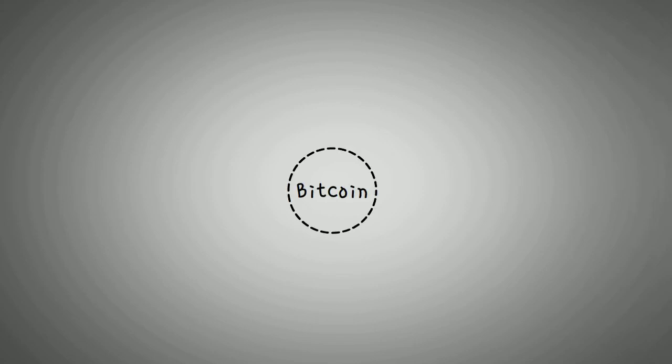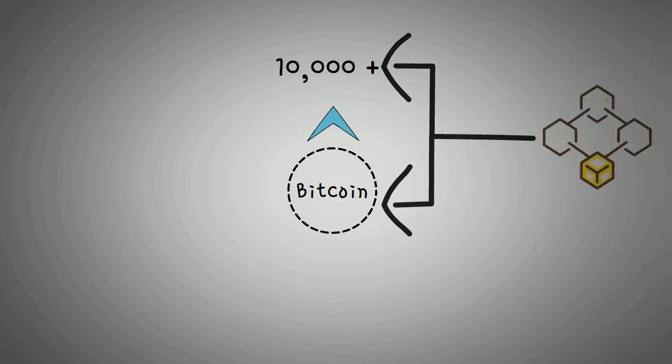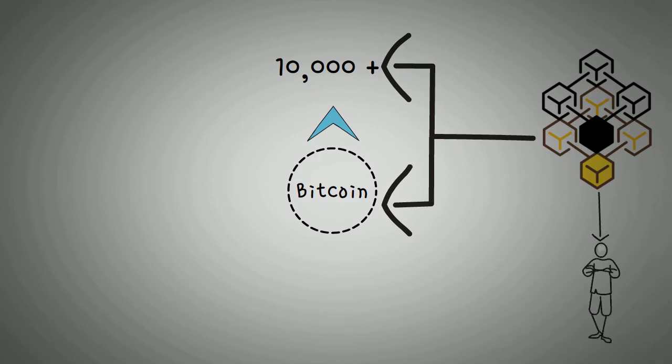Ever since Bitcoin was invented, over 10,000 coins and tokens have been launched on different blockchain structures. Although many improvements have been made since the first blockchain, they're still plagued by many issues today.